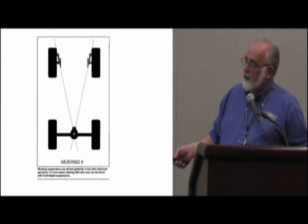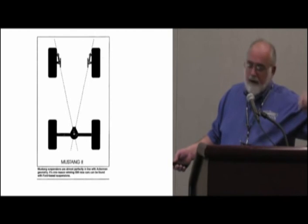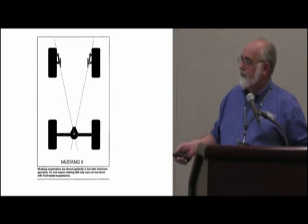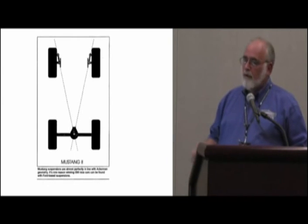Find the center of the rear end, find the lower ball joints, or wherever the kingpin runs through, and draw those lines, or stretch a string. A straight line is a straight line, whether you draw it with a CAD system or you pull the string tight. And then see where your tie rod is. If your tie rod is not on that line, fix it.